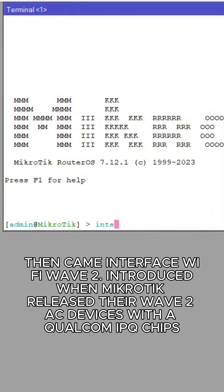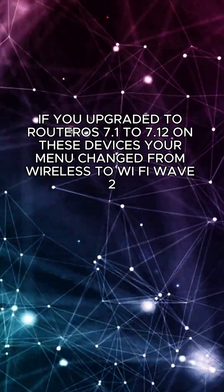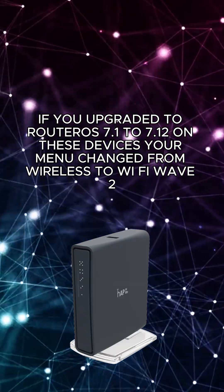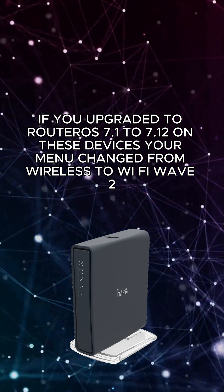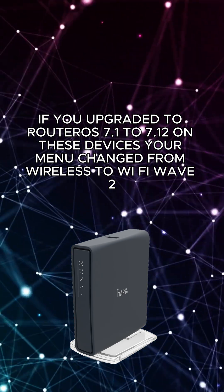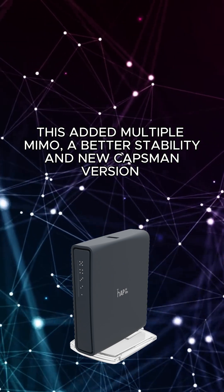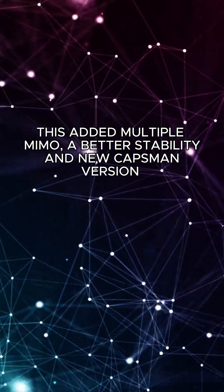Then came Interface Wi-Fi Wave 2, introduced when MikroTik released their Wave 2 AC devices with the QCOM IPQ chips. If you upgraded to RouterOS 7.1 to 7.12 on these devices, your menu changed from Wireless to Wi-Fi Wave 2. This added multiple MIMO, better stability, and a new CAPsMAN version.